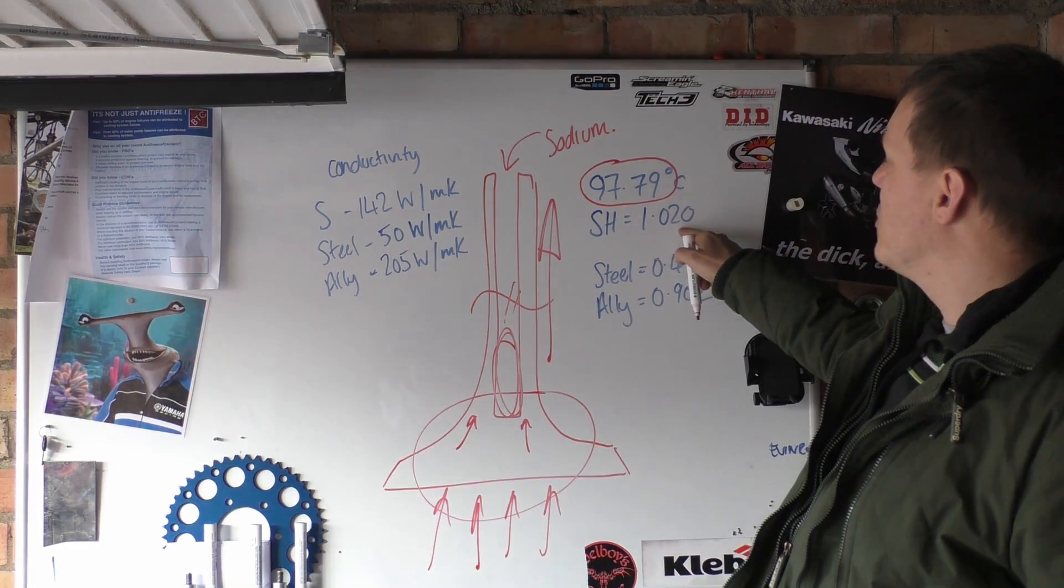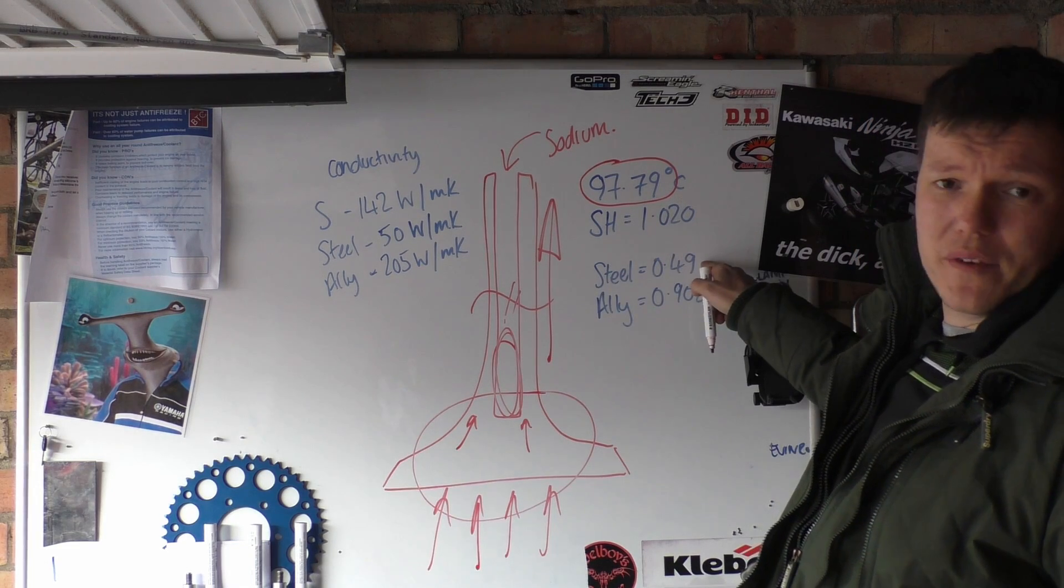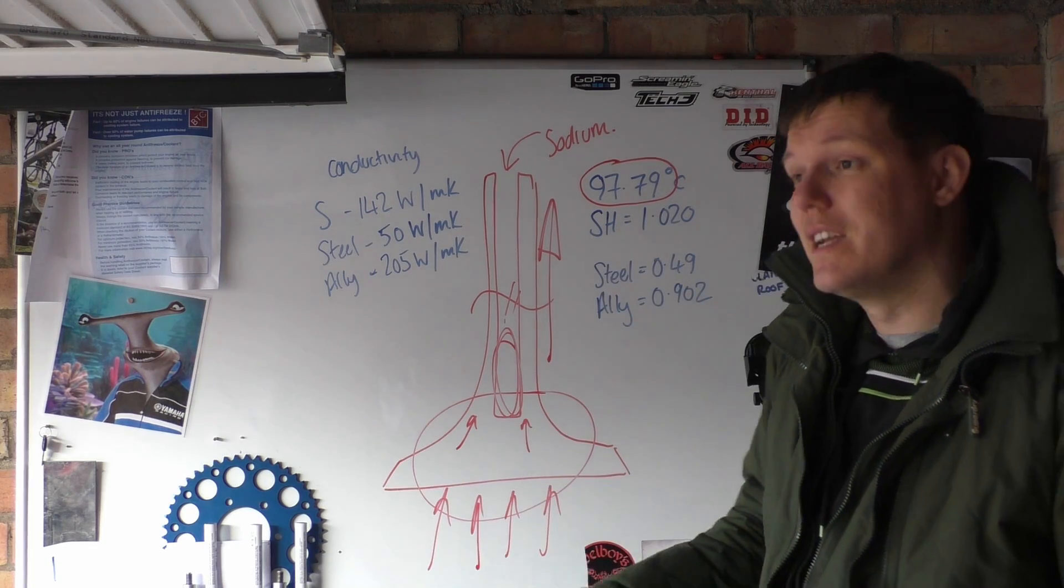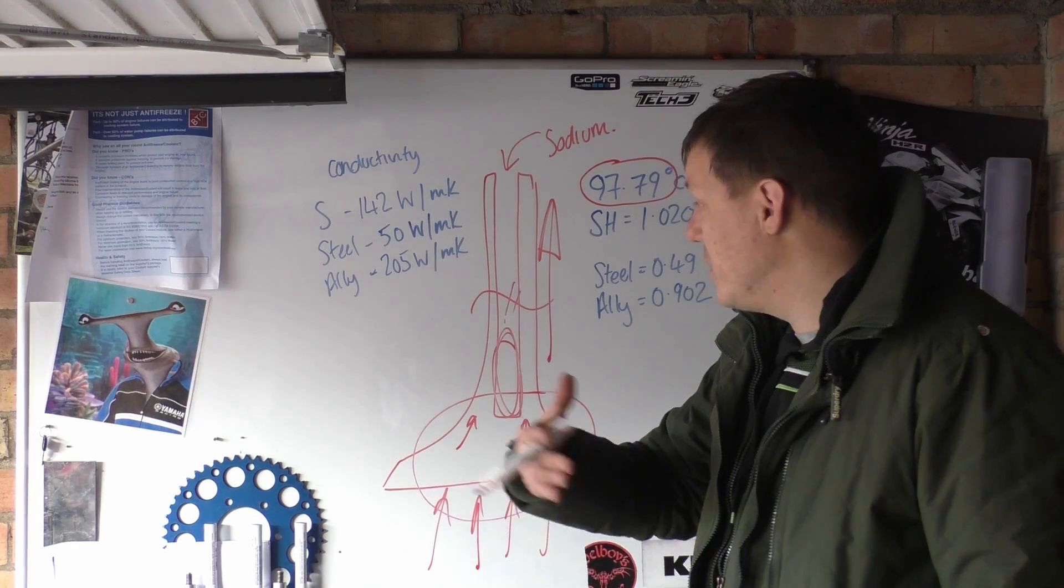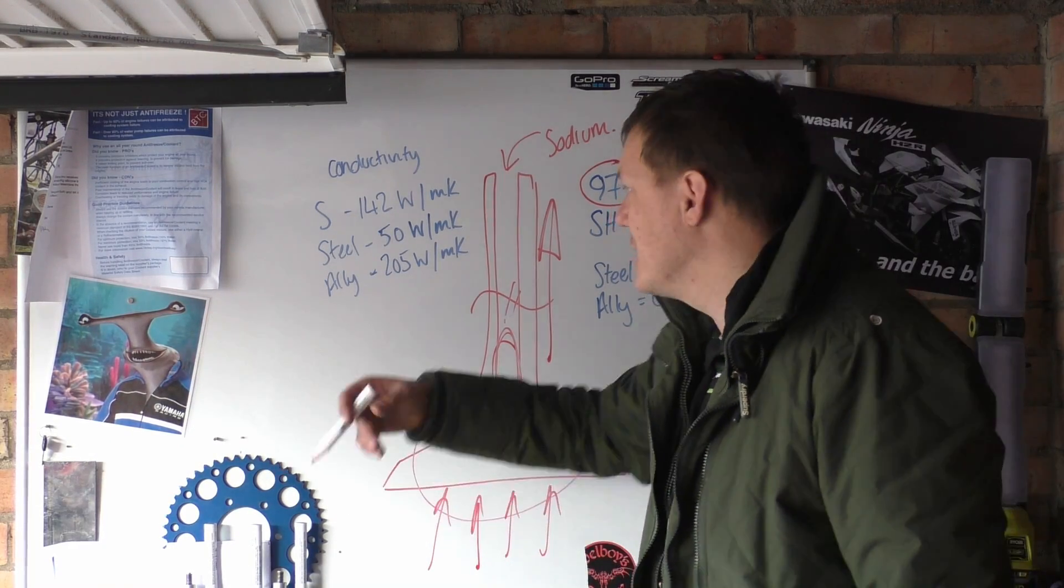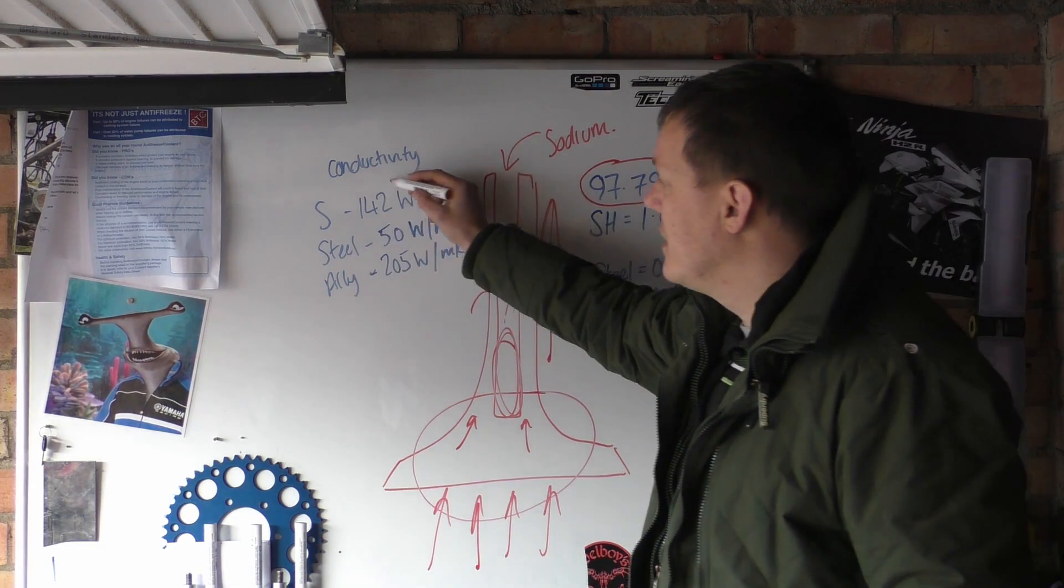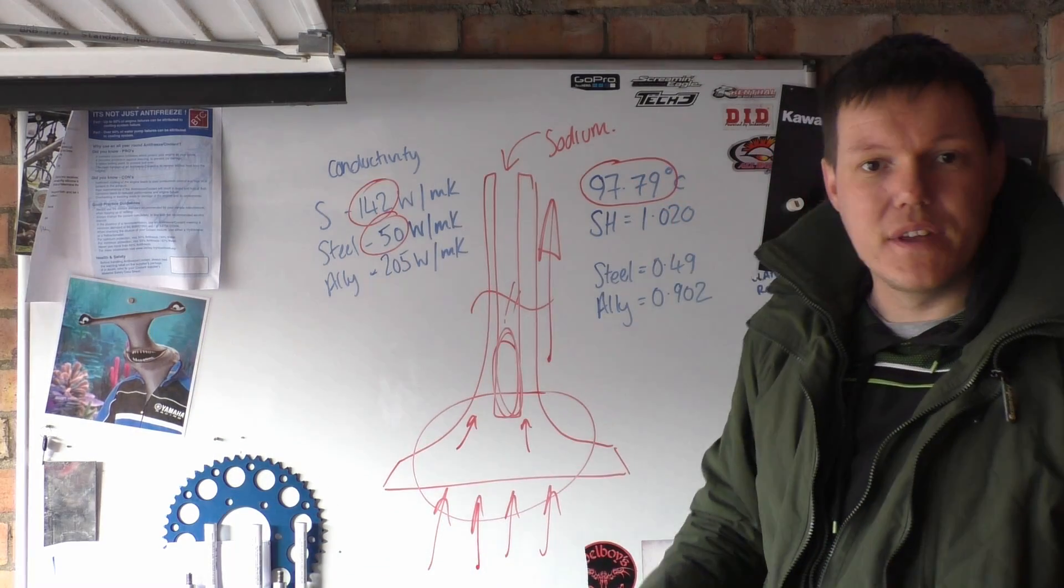If we look at the specific heat of sodium it's 1.2, whereas steel is basically 0.5 and aluminum is 0.9. So it has a better specific heat capacity - it can store more heat. Specific heat capacity is also important when you talk about phase transitions from going from a solid to a liquid and then a liquid to a gas.